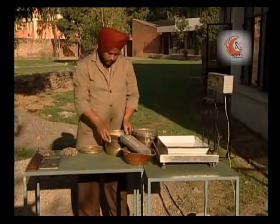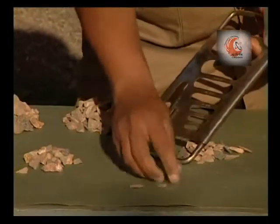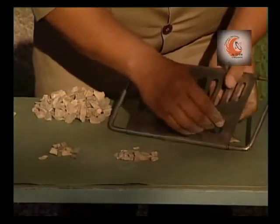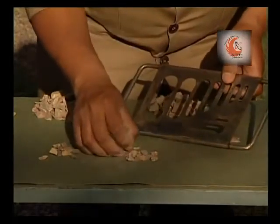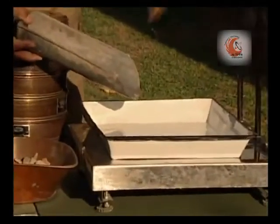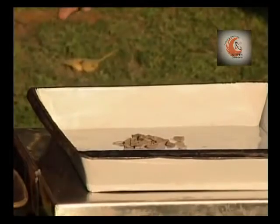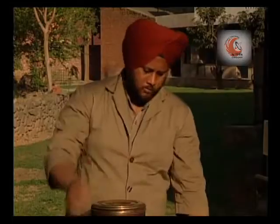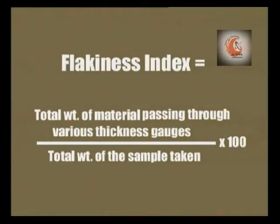Likewise, the gauged weight of flaky particles from the fraction of aggregate corresponding to the 12.5 to 10 mm sieve and 10 to 6.3 mm sieve is determined and recorded. Flakiness index is the total weight of material passing through the various thickness gauges expressed as a percentage of the total weight of sample taken.